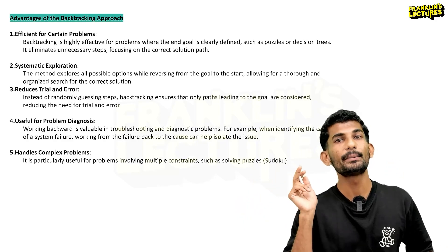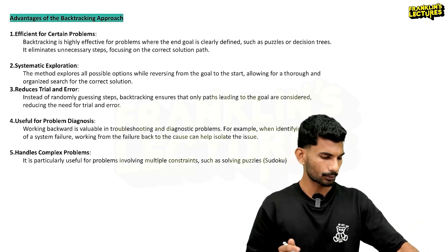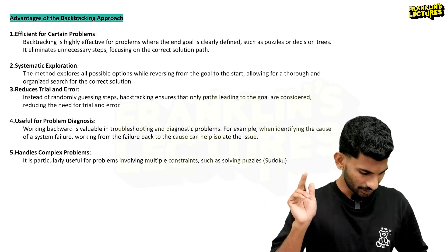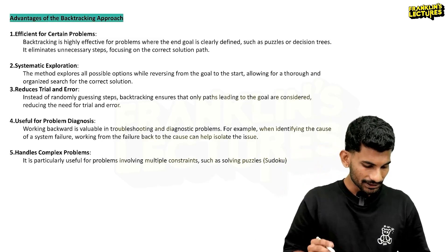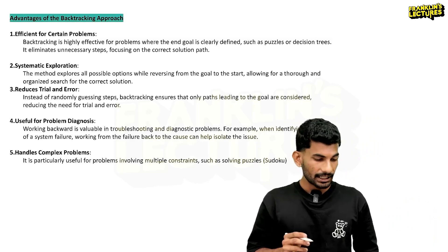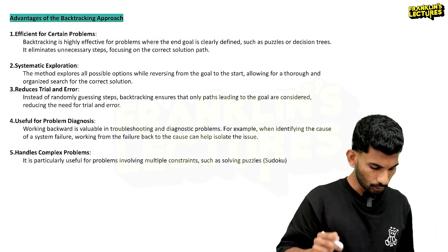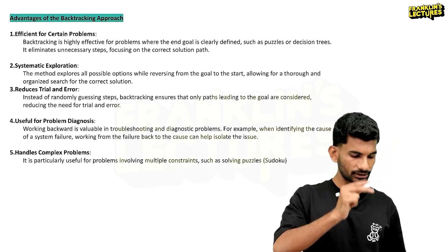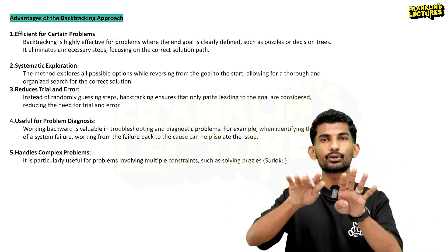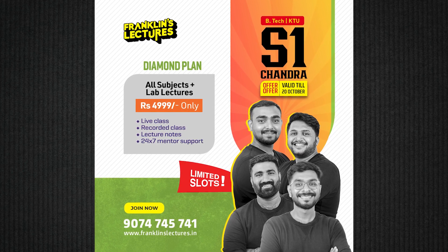Another example is solving a maze. Solving a maze is a good example of the backtracking approach — that is systematic exploration. The method explores all possible options while reversing from the end goal to the start, allowing for a thorough, organized search for the correct solution.